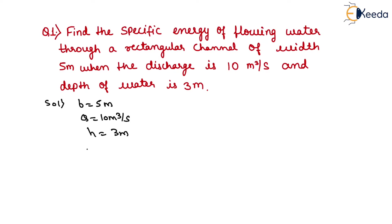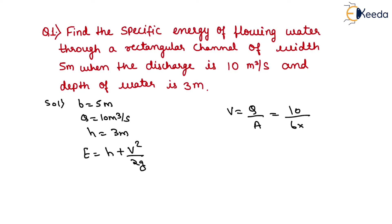We know that specific energy E equals h plus v² upon 2g. Velocity v equals discharge upon area, which equals 10 upon (b × h). Putting the values of b and h — that is 5 into 3 — the value of v equals 2/3 m/s.